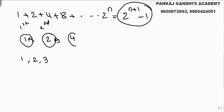So in the next bag, I'm going to put 4 rupees. Now what we can give is 1, 2, 3 using this bag of 4 — combining them: 4, 5, 6, 7. So with bags of 1, 2, and 4, I can give anything up to the next power of 2, that is 8 minus 1, which is 7.